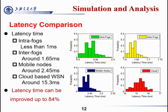To evaluate our proposed scheme, we used two simulation platforms with two fogs and one cloud. As shown, the latency for intra-fog is less than 1 ms, inter-fog is around 1.65 ms, and the mobile node case is around 2.45 ms. The cloud-based WSN is around 15.3 seconds. So the latency can be improved by up to 84%.